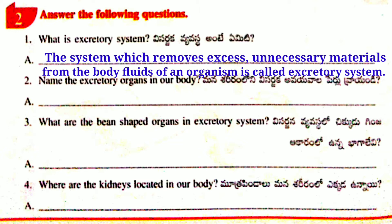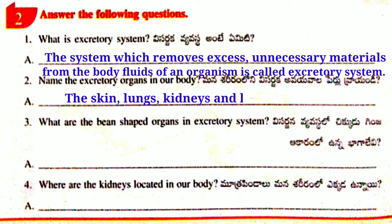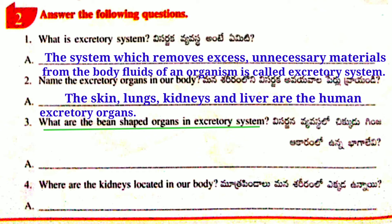called the excretory system. Second Question: Name the excretory organs in our body. Answer: The Skin, Lungs, Kidneys, and Liver are the human excretory organs. Third Question: What are the bean-shaped organs in the excretory system?